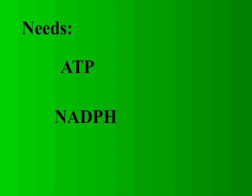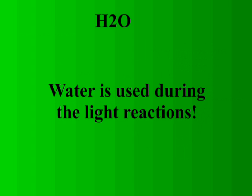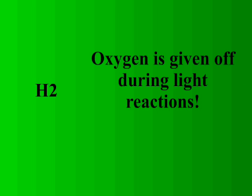As it turns out, we can make both of these in a single step: the light reactions. This is the first part of photosynthesis, and it involves an input of water. Remember, water is used during the light reactions. The plant rips that water apart into two hydrogens and one oxygen. The oxygen is given off as a waste. Remember this — oxygen is given off during the light reactions.